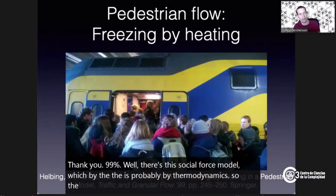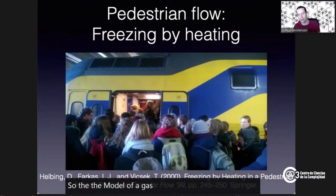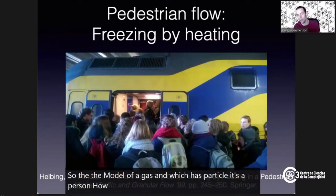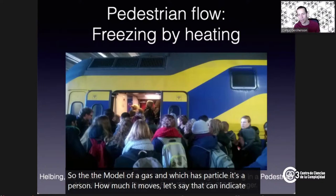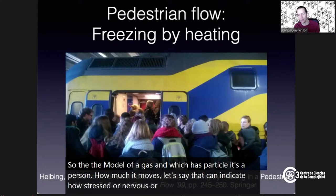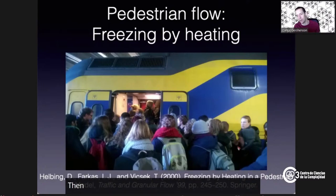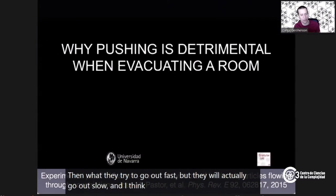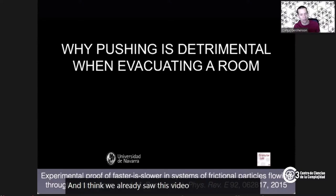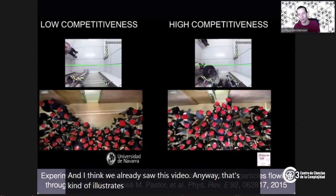Depending on how much a person moves, that can indicate how stressed, nervous, or shaky that person is. What they found is that if people are all panicking trying to evacuate a room, they try to go out fast but actually go out slow. That kind of illustrates this effect very clearly — on the left side, people going out calmly go out faster compared to the right side where it's every person for themselves.